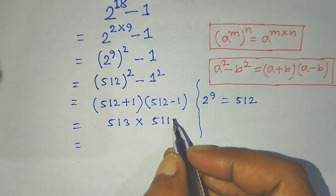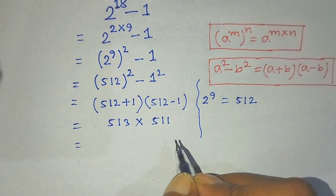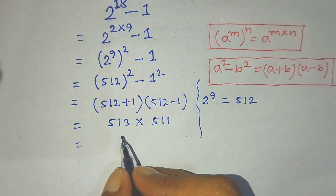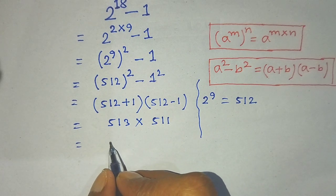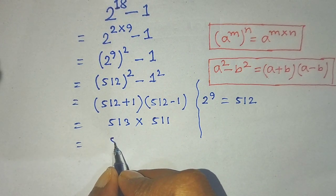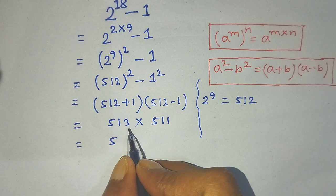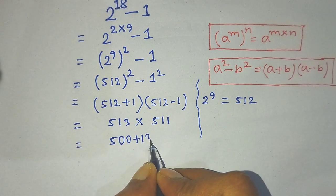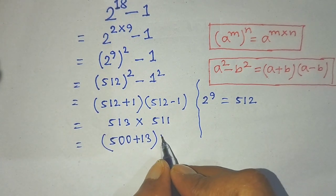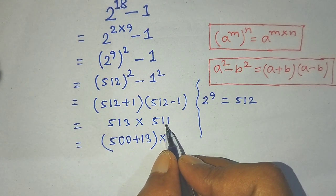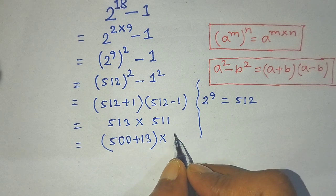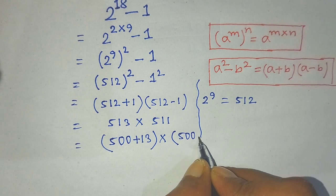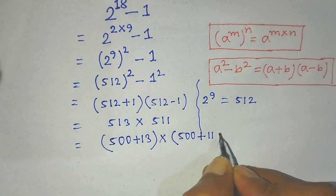To simplify this algebraic expression without a calculator, we write 513 as 500 plus 13, and in the place of 511 we write 500 plus 11.